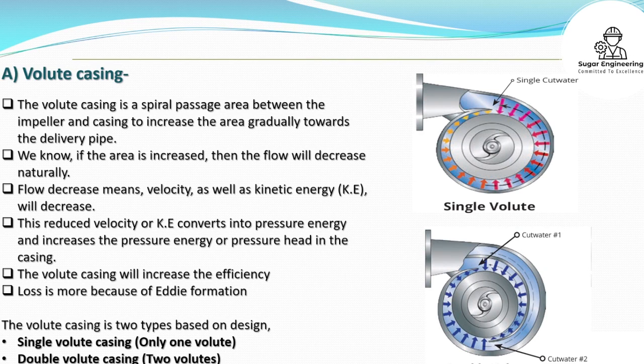The volute casing is of two types based on design: single volute casing, which has only one volute, and double volute casing, which has two volutes.